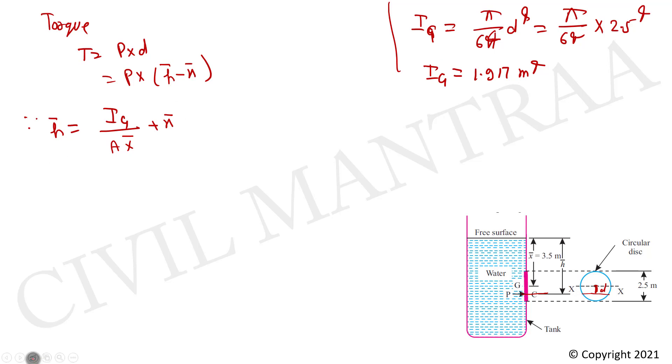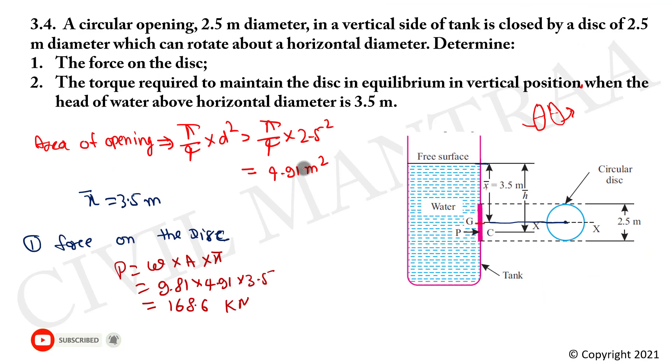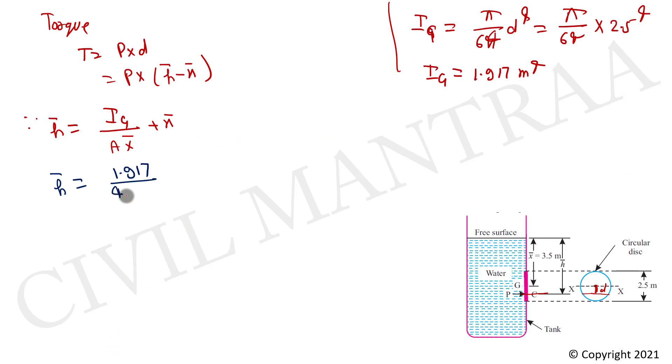h-bar equal to Ig, 1.917, upon area 4.91 multiply by x-bar 3.5, plus 3.5. h-bar equals 3.61 meters.